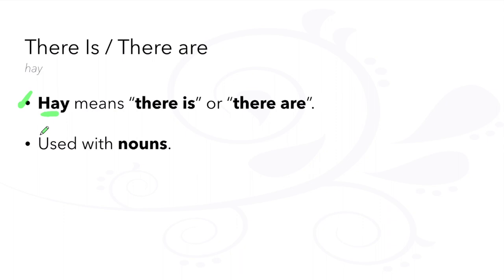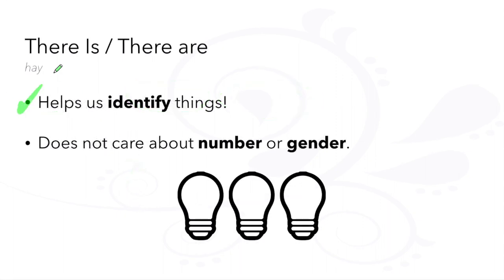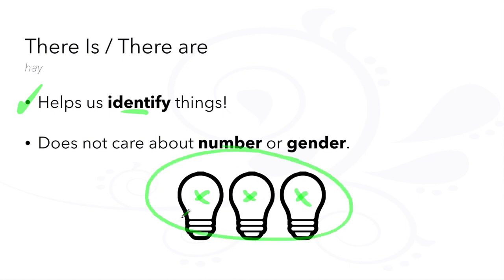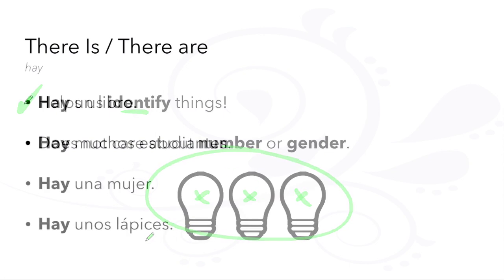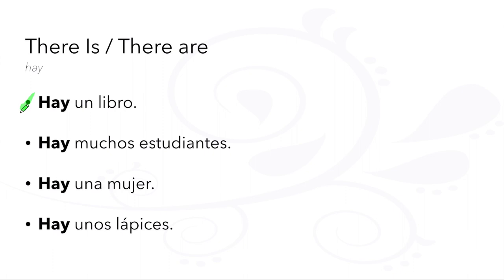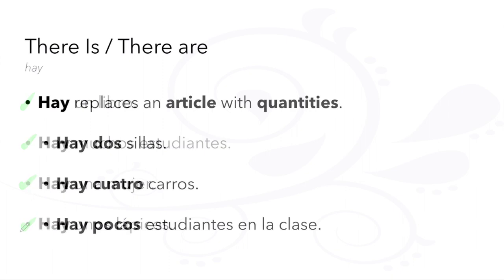The word 'I' indicates existence and means 'there is' or 'there are.' It's used primarily when working with nouns. 'I' helps us identify things and does not care about the number or gender of the objects being identified. When used with quantities, 'I' replaces a definite or indefinite article.